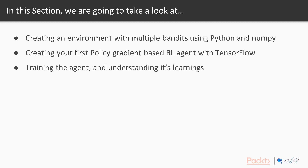In the second video, what we're going to do is create our first policy gradients-based reinforcement learning agent with TensorFlow. What that really means is we're going to create an agent that learns how to crack the contextual bandit's environment using something called policy gradient — which means slowly shifting the policy according to how different parameters in the policy correspond to how right or wrong our actions were, using TensorFlow.